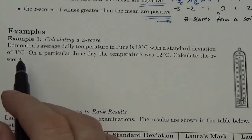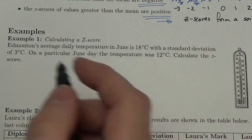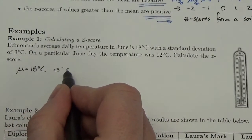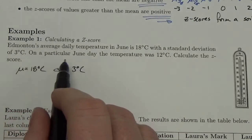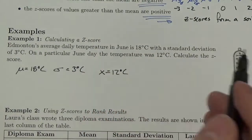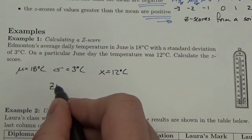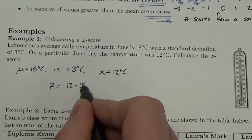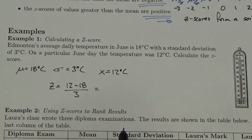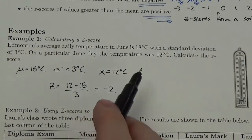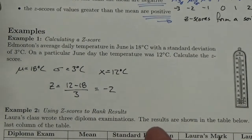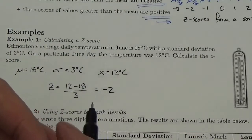Edmonton's average daily temperature in June is 18 degrees Celsius — that's the mean — with a standard deviation of 3 degrees Celsius. On a particular June day, the temperature was 12 degrees Celsius — that's our data value. To get the z-score, we take 12 minus 18 divided by 3. That gives us negative 6 divided by 3, which is negative 2. That temperature was two standard deviations below the mean, giving you a sense of how that day fits within the larger group.